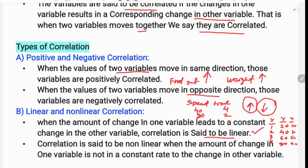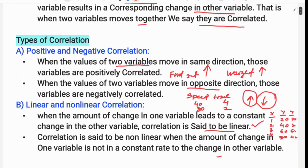The correlation is said to be non-linear when the amount of change in one variable does not result in a constant rate of change in the other variable. If the rate of change is not constant — sometimes more, sometimes less — then the variables are non-linearly correlated.